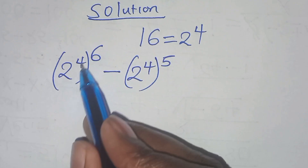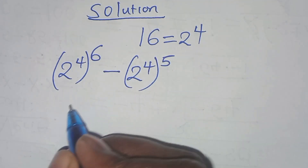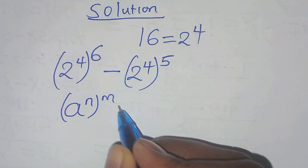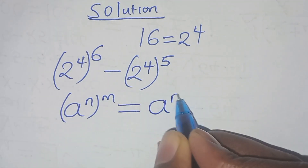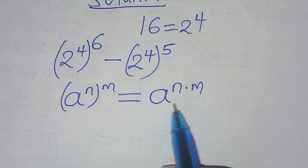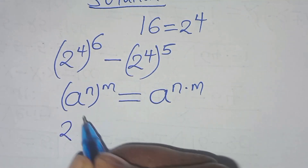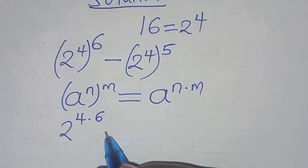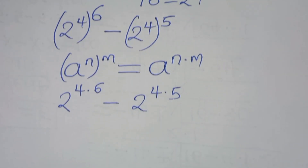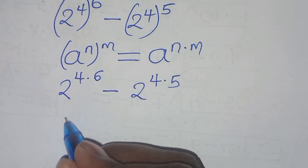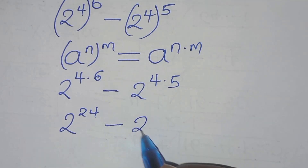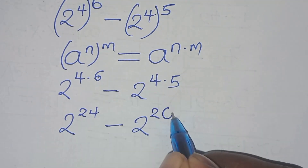The next step: 2 to the power 4 raised to power 6 is in the form of a to the power n raised to power m, which we can express as a to the power n times m. So we have 2 raised to the power 4 times 6, minus 2 to the power 4 times 5. This gives us 2 to the power 24, minus 2 to the power 20.